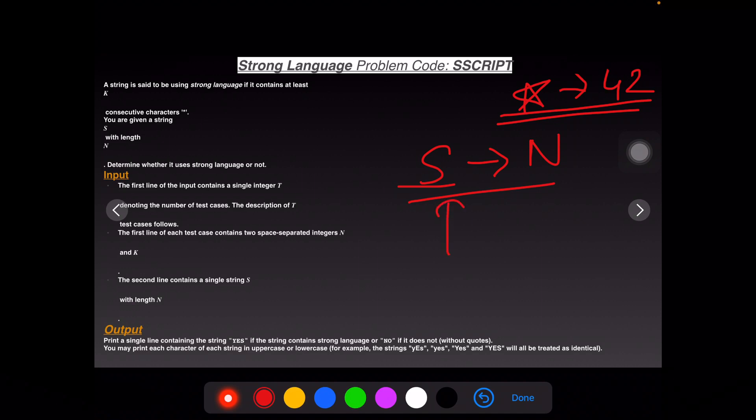I might be given a string and I'll have to find whether it is a strong language or not. We'll see the input and the test cases in a minute. Let us first look at the input. First we are given an integer t which is the number of test cases, and then the first line has separated integers n and k.